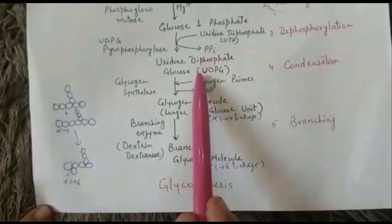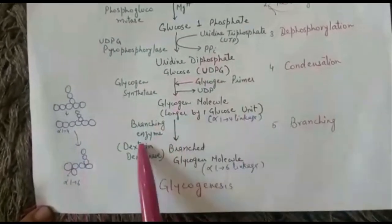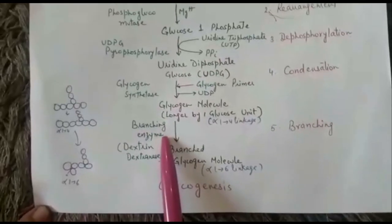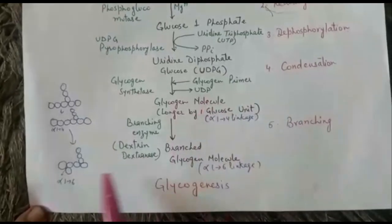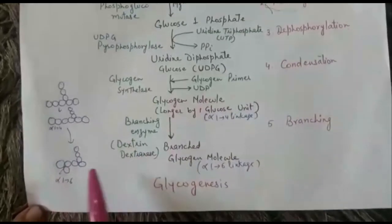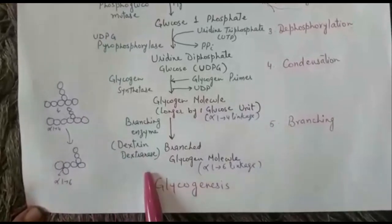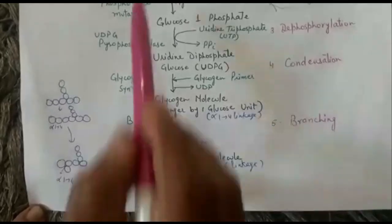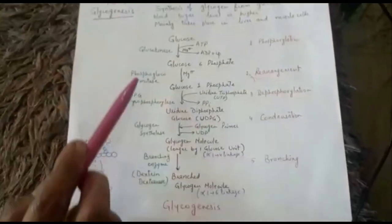More glucose units are then added by condensation, and more branching points are formed by the branching enzyme. As a result, the glycogen primer, which is initially a short molecule, ultimately develops into a large glycogen molecule having many alpha-1,4 and alpha-1,6 linkages. This formation of glycogen from glucose is known as glycogenesis.